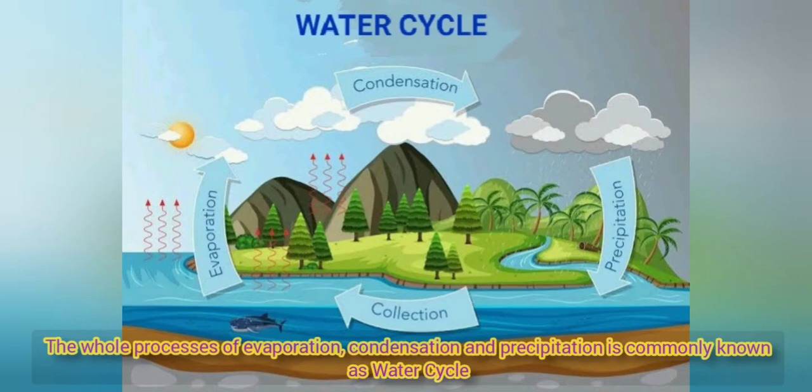Water vapor goes into the atmosphere through the process of evaporation. As it moves upward, it becomes cold and condensation takes place. Ultimately, in favorable conditions, it again comes down to the surface of the earth as fog, mist, rain, and snow.